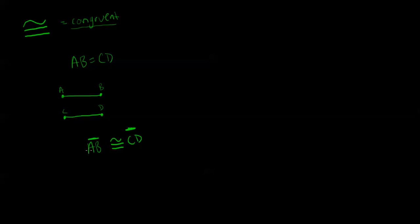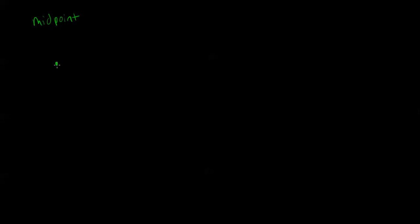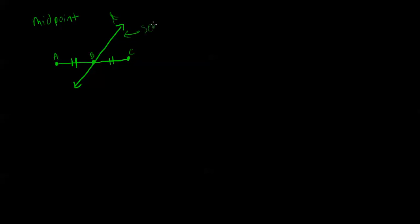Now we're going to look at the midpoint of a segment. The midpoint of a segment is a point that divides the segment into two congruent segments. A point, line, ray, or other segment that intersects a segment at its midpoint is said to bisect the segment — and that is called a segment bisector. For example, we have line AC containing midpoint B. Line L intersects line AC at its midpoint, so line L is the segment bisector of AC. We can tell that B is the midpoint because the tick marks on both sides show that both halves are congruent.